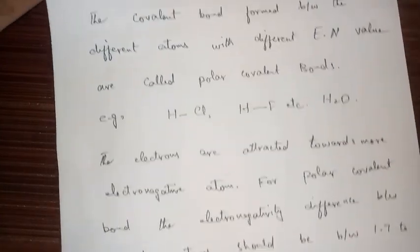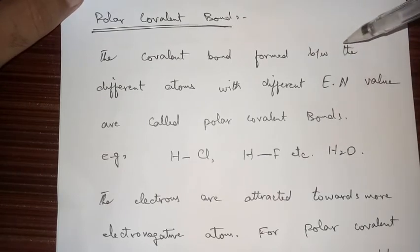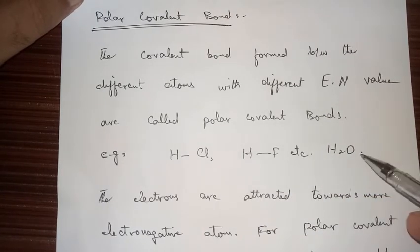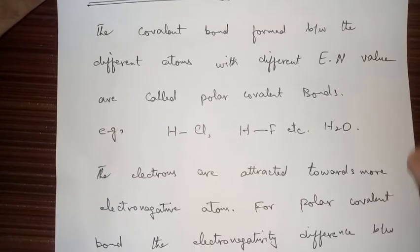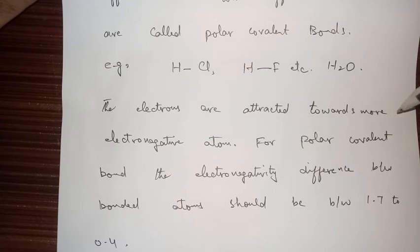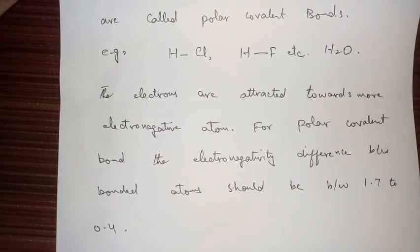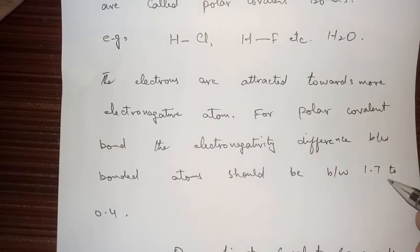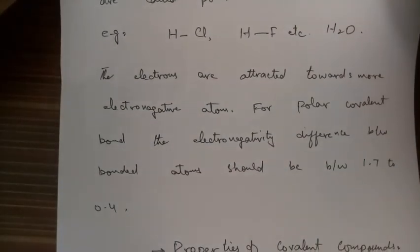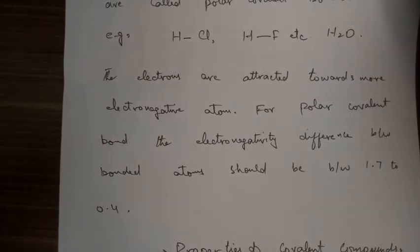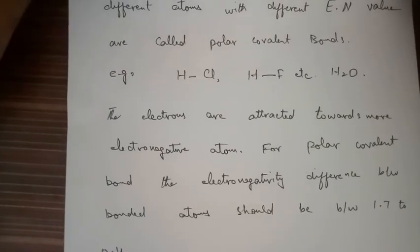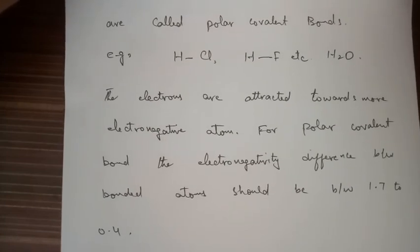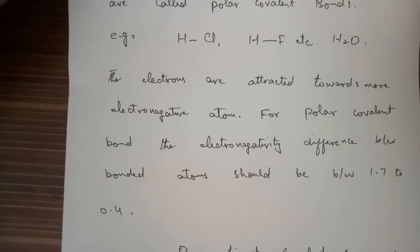The polar covalent bond is formed between different atoms with different electronegativity values. For example, hydrogen chloride, hydrogen fluoride, and H2O are all polar covalent bonds. For a polar covalent bond, the electronegativity difference between the bonded atoms should be between 0.4 and 1.7 — not more than 1.7 and not less than 0.4. In polar covalent bonds, electrons are attracted towards the more electronegative atom, which induces a dipole moment, creating polarity in this type of bond.